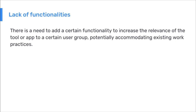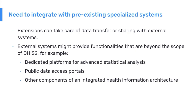Another common use case for extending DHIS-2 is addressing a lack of functionality within the core platform. There is sometimes a need to add functionality to increase the relevance of the tool to a certain user group, potentially accommodating existing work practices. It may be necessary to integrate with pre-existing specialized external systems, and DHIS-2 extensions can handle data transfer or sharing with those systems. Those systems might provide functionalities beyond DHIS-2's scope — for example, dedicated platforms for advanced statistical analysis, portals providing public access to healthcare data, or other components of an integrated health information architecture such as a client registry or facility registry.